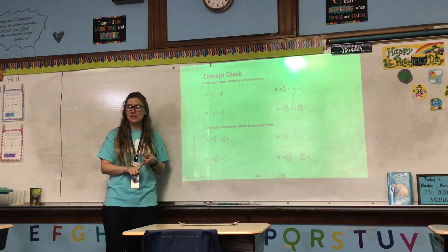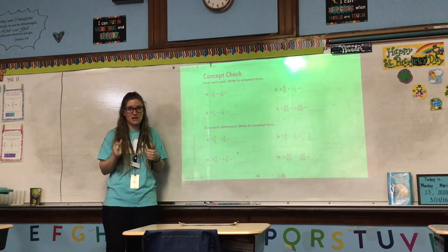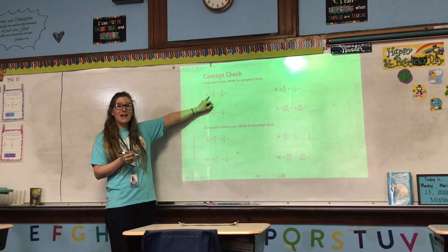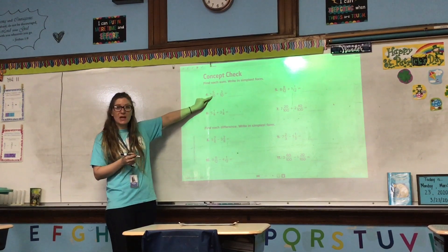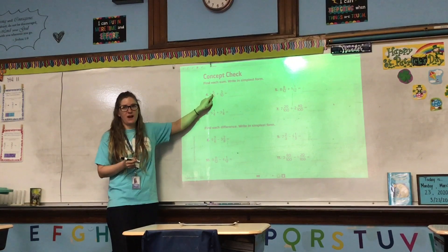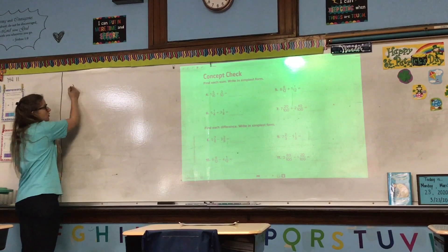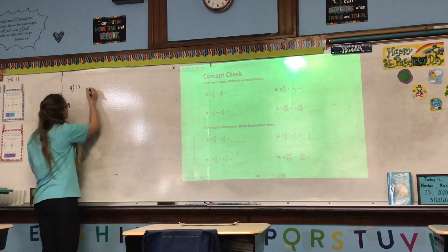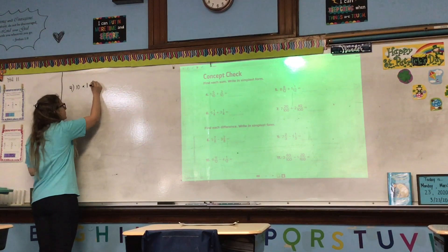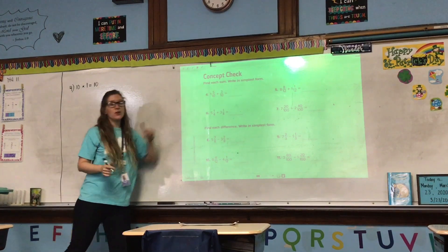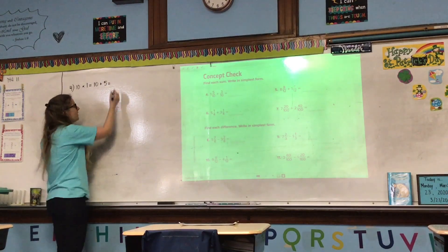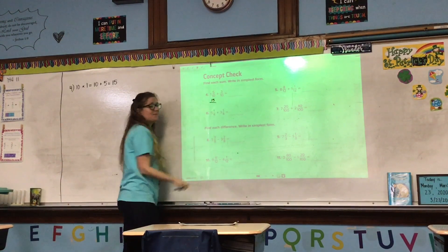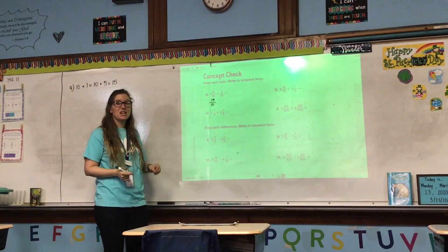As soon as you come back to check, pencils and erasers get put away, red pen comes back out. Okay, so number 4: we have 1 and 5 tenths plus 3 tenths. We need to convert 1 and 5 tenths into an improper fraction. To do that, we start with the denominator, which is 10, and multiply it by the whole number, which is 1. 10 times 1 equals 10. Now we add the numerator, which is 5. 10 plus 5 is 15, so our improper fraction is 15 tenths.